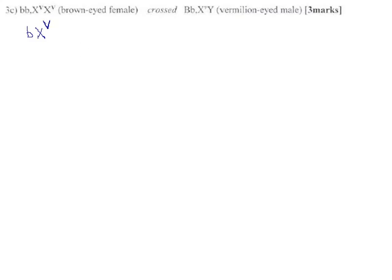So that'll save us some work. Lots of variety on the dad though. We're going to have to FOIL this. There are four possible gametes that could come from dad, and they are: